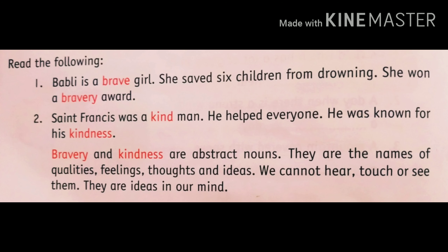First we read sentence 1. Read the following. First one is: Bubbly is a brave girl. She saved six children from drowning. She won a bravery award. Second one is: Saint Francis was a kind man. He helped everyone. He was known for his kindness.